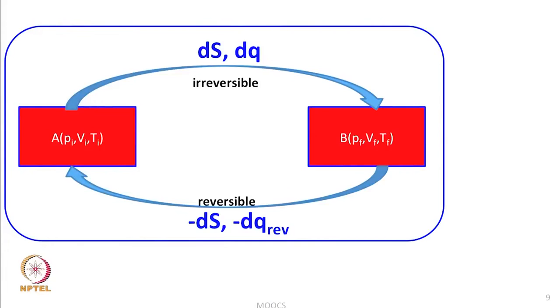We have discussed how to calculate the entropy change in the surroundings and what entropy means in terms of disorder. By taking the examples of HCl and CO, we showed that if the system is perfectly ordered the entropy equals 0, and if there is even small disorder, entropy is not 0. Now we will discuss how to calculate the entropy change of the system. Please pay special attention because the same formula will be used whether the process is reversible or irreversible, since entropy is a state function.